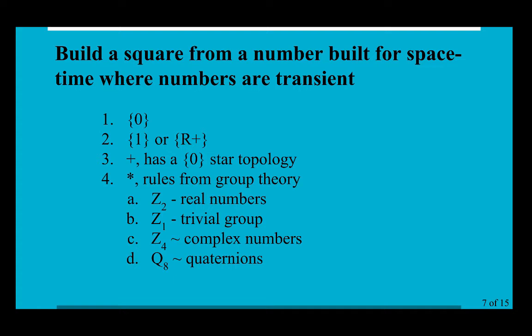And it's also called the sign group. Then because we're reductionists, we'll think about Z_1, the trivial group, which is anything but trivial. Z_4 is needed for multiplying complex numbers together, and finally we'll get to the quaternion group Q_8, which will be rich enough to deal directly with space-time.